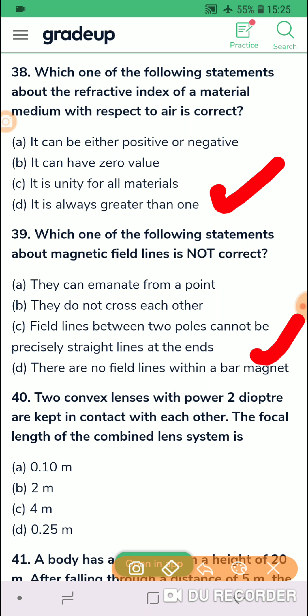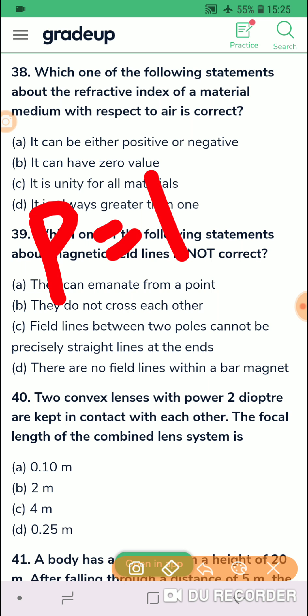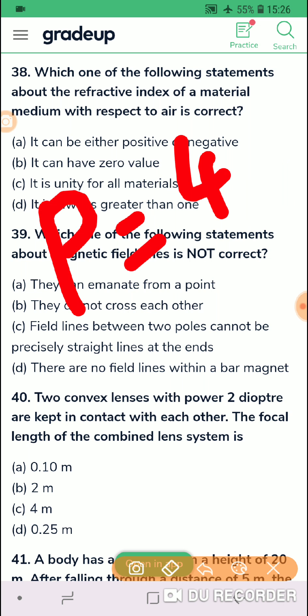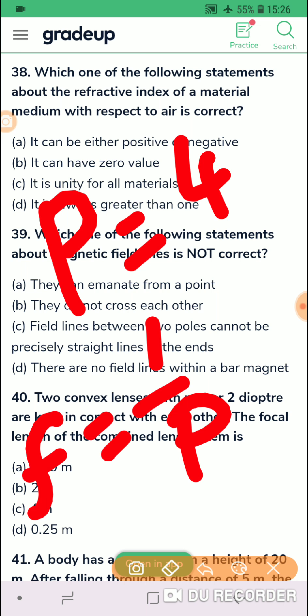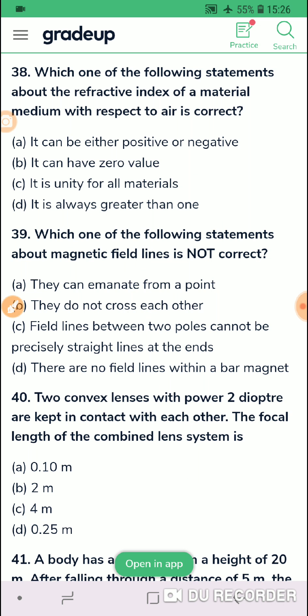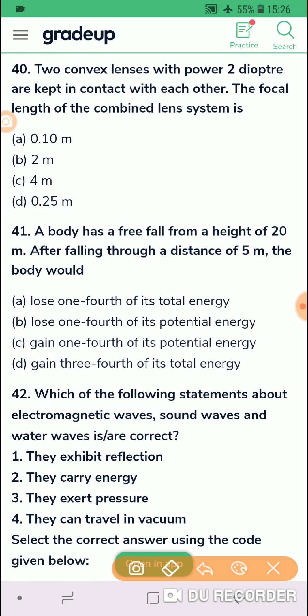Two convex lenses with power 2 diopter are kept in contact with each other. The focal length of the combined lens system will be. See, power is this. You know that 1 by F is equal to 1 by F1 plus 1 by F2. So power P will be equal to how much? Power P1 plus P2. So here they have given the powers as 2 diopter. So the combined power will be how much? 4 diopter. Now focal length they wanted. Focal length is equal to 1 by power. So 1 by 4 in meters of course. And 1 by 4 will be how much? 1 by 4 will be equal to 0.25 meters. So I will go for 0.25 meters. Question 40.